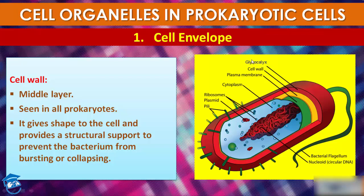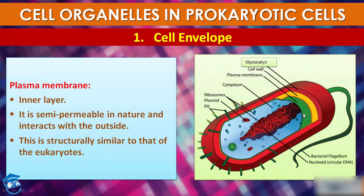Then comes the plasma membrane, which is the innermost layer. It is semi-permeable in nature, meaning it selectively allows components to come in or go out. It interacts with the outside world. This membrane is structurally similar to that of eukaryotes — this is the main point to remember.